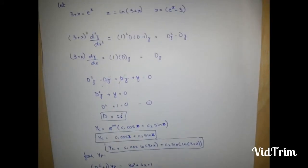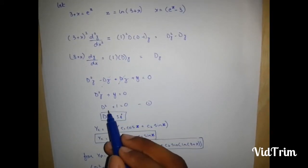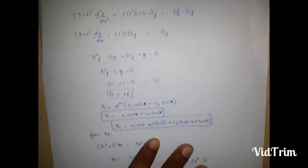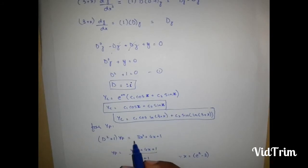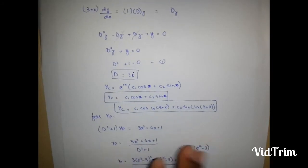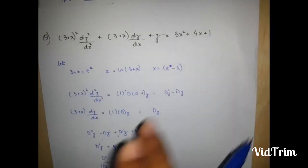For yp, take this. yp is equal to 3x square plus 4x plus 1, which is our right hand side.